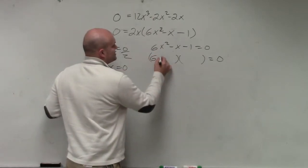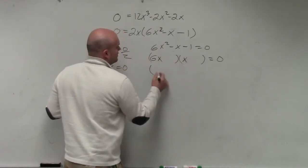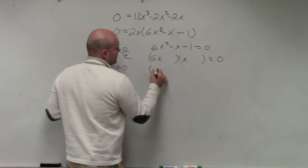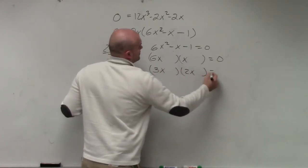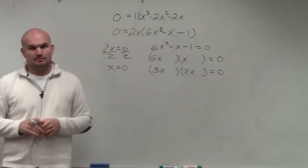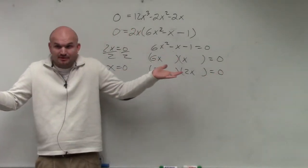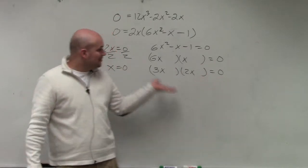So my options are either 6x or x. Or I could do 3x times 2x. Does everybody agree with me? Those are my only options, right? As far as the least rational numbers. Those are my only options.